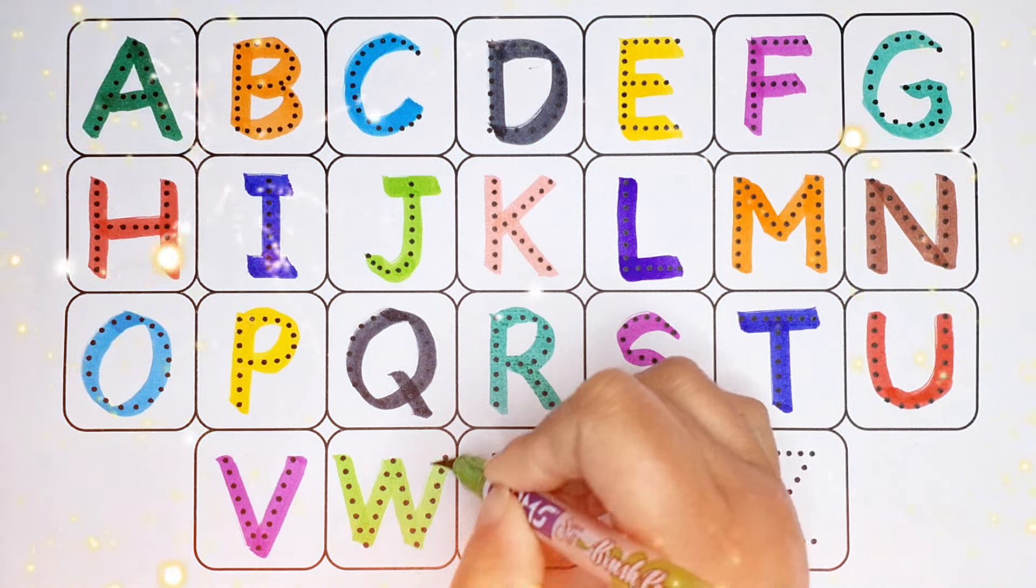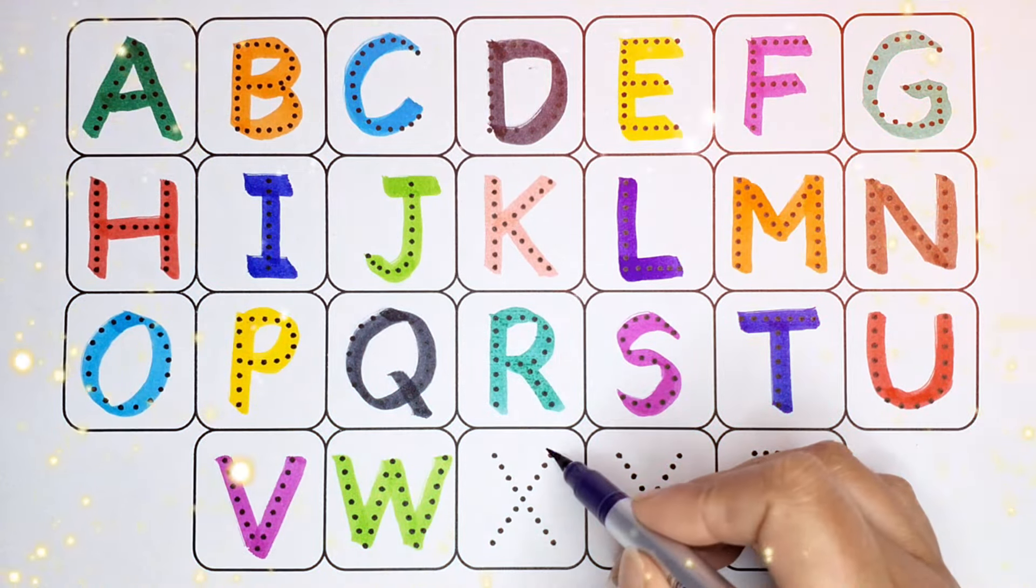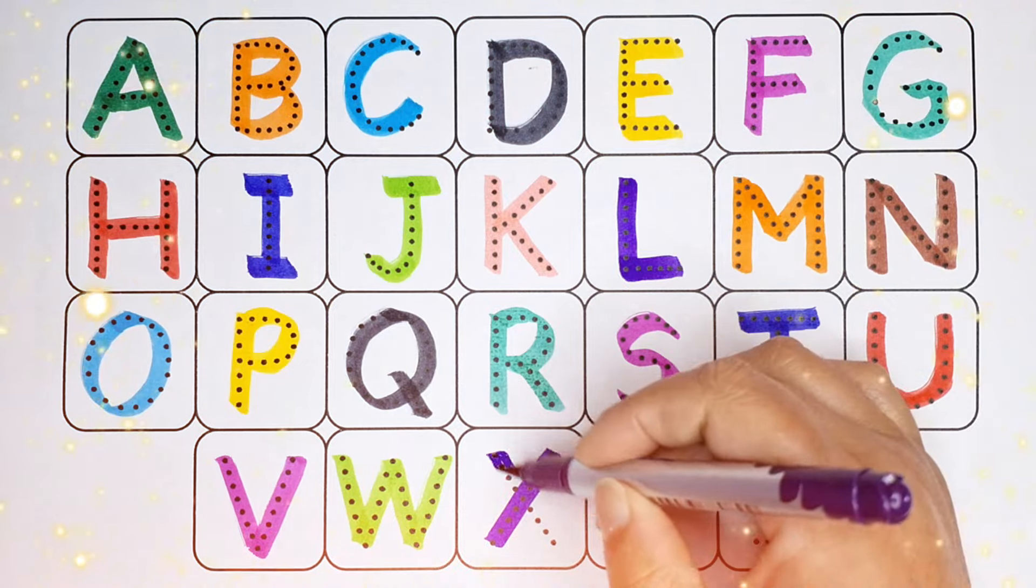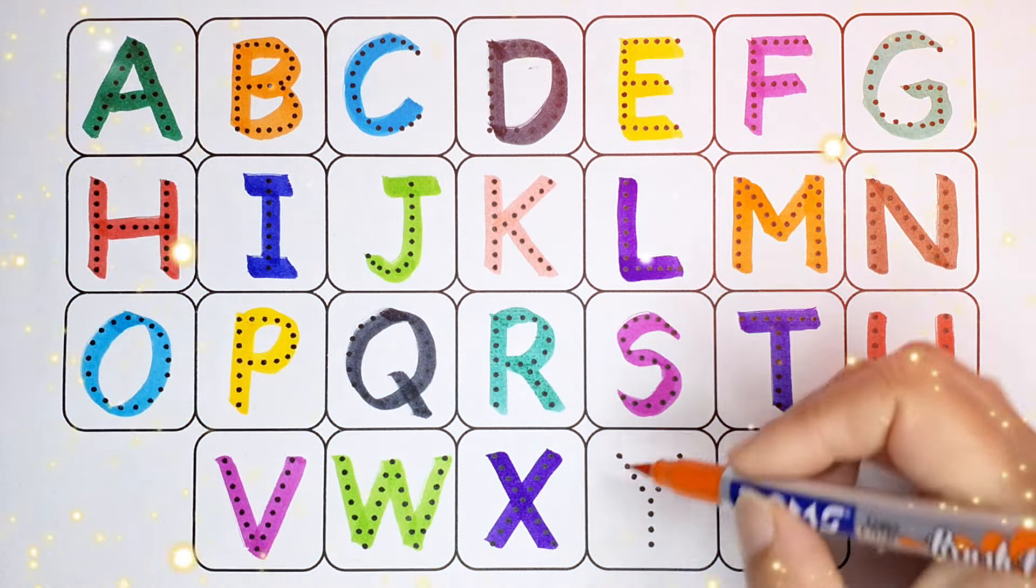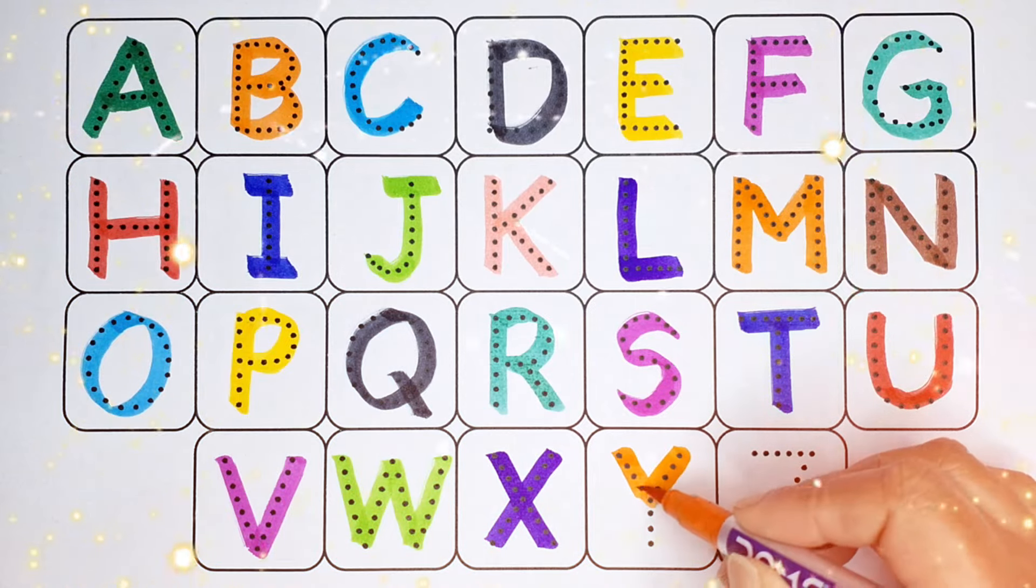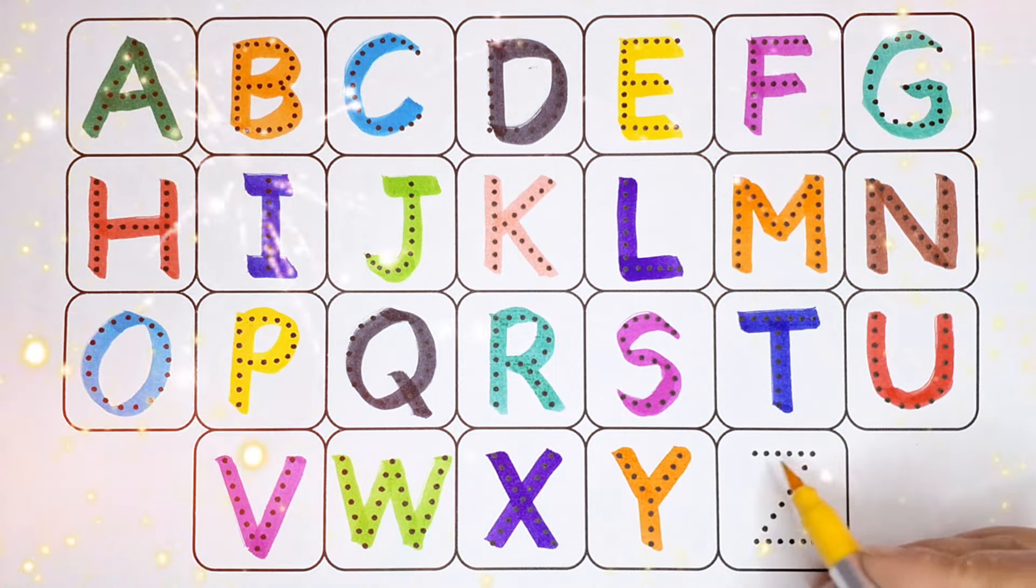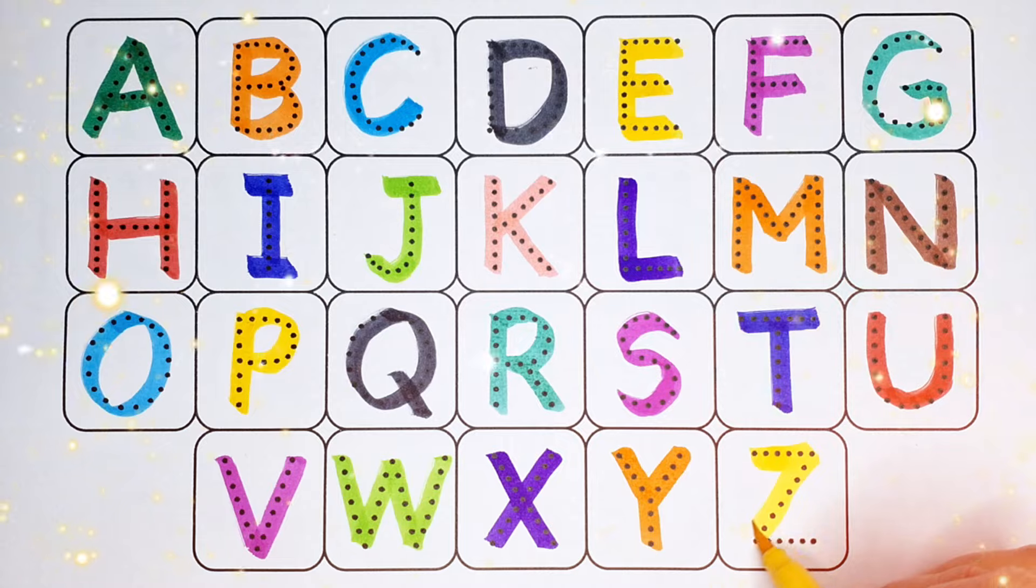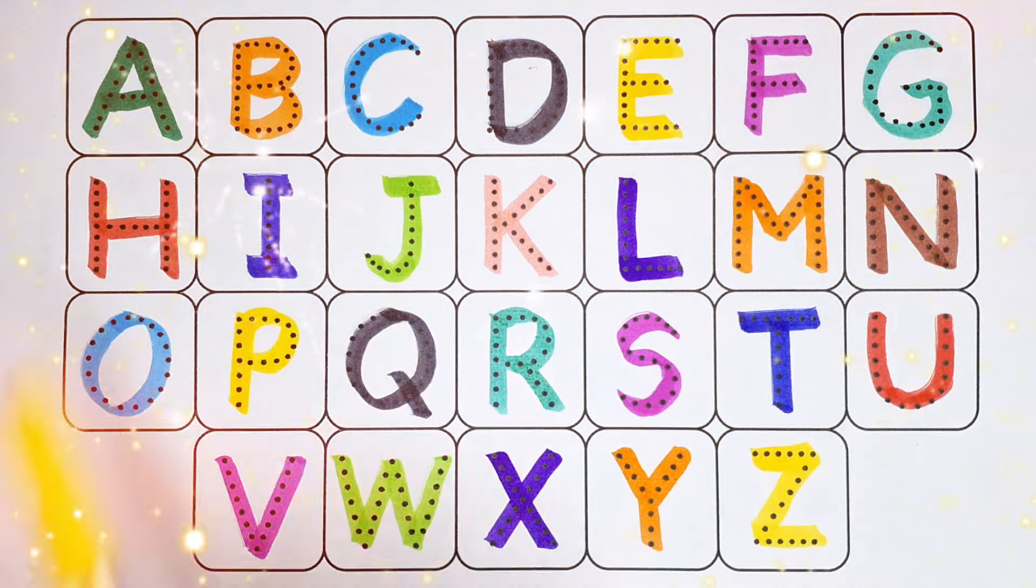Green color W, W for watch. Purple color X, X for x-ray. Orange color Y, Y for yoyo. Yellow color Z, Z for zero.